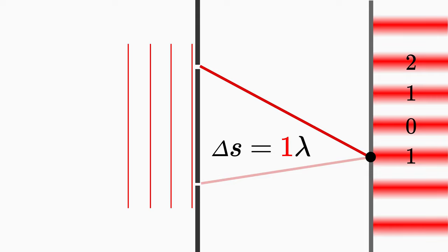So if you follow the waves up to the bright fringes, then you use the condition for constructive interference. Because there, the path difference is exactly multiple of the wavelength.